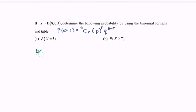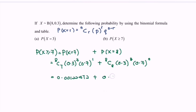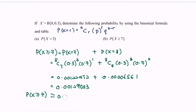For question b, we find P(X≥7). This means P(X=7) + P(X=8). Using the formula: 8C7 × (0.3)^7 × (0.7)^1 + 8C8 × (0.3)^8 × (0.7)^0. Summing and rounding, P(X≥7) ≈ 0.0013.